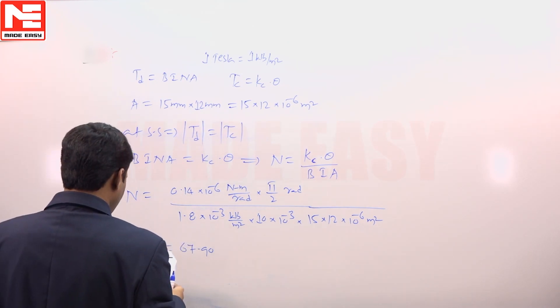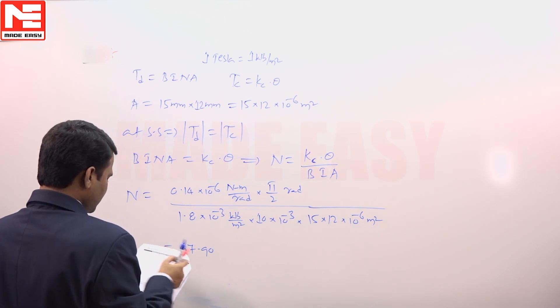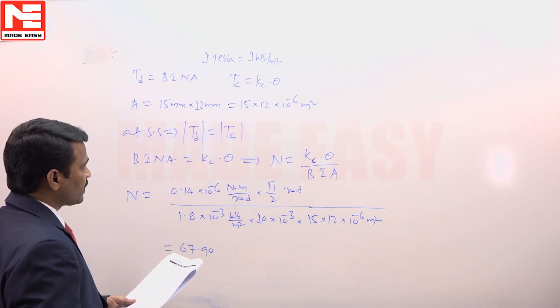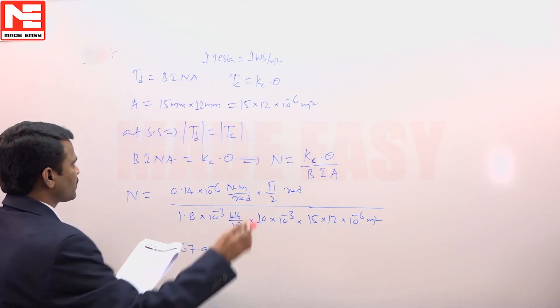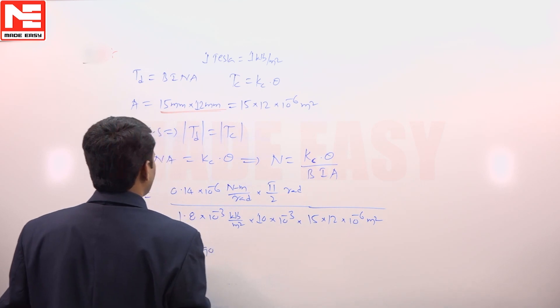This problem is related to the concept of PMMC instrument. He has given the area of cross section of the coil, area of cross section of the coil is given as 15 mm by 12 mm.